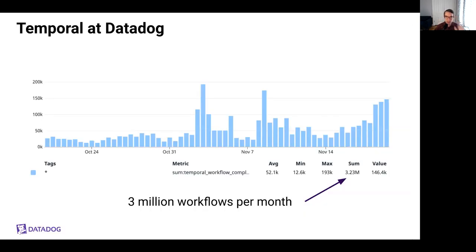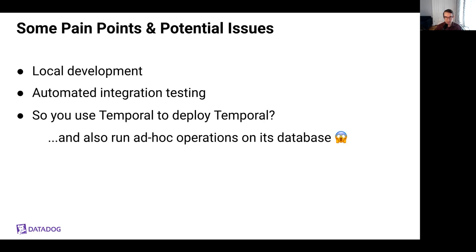Here's a quick idea of our overall throughput. Right now we're executing about 3 million workflows per month, and usage continues to grow rapidly. As our usage of Temporal has increased, we've noticed some challenges developing against and operating Temporal day-to-day that played into our decision to invest in Temporalite.